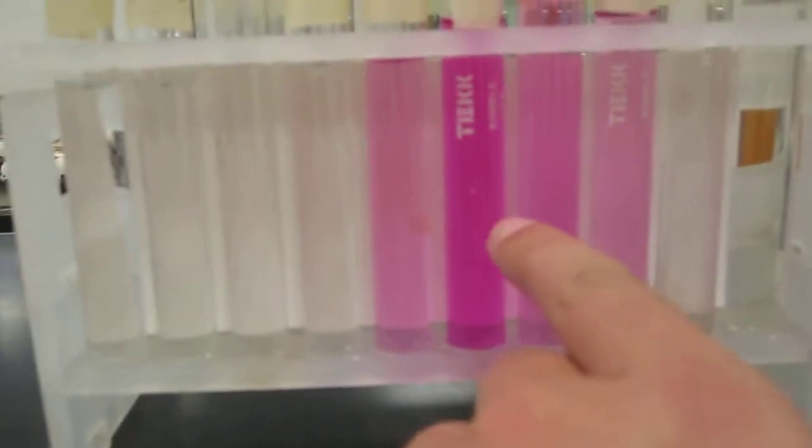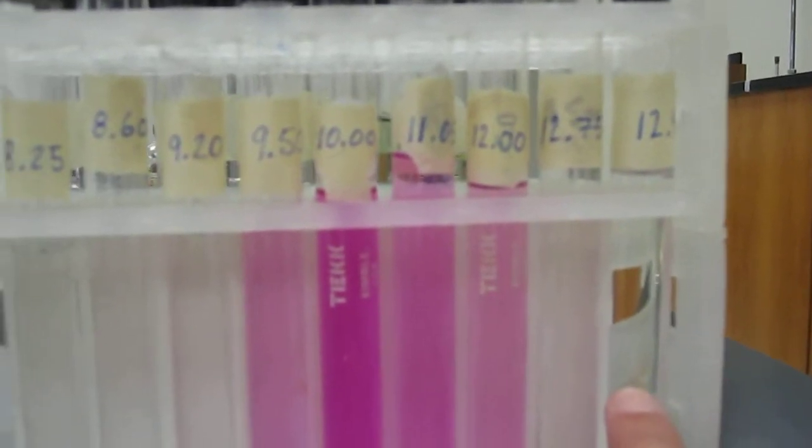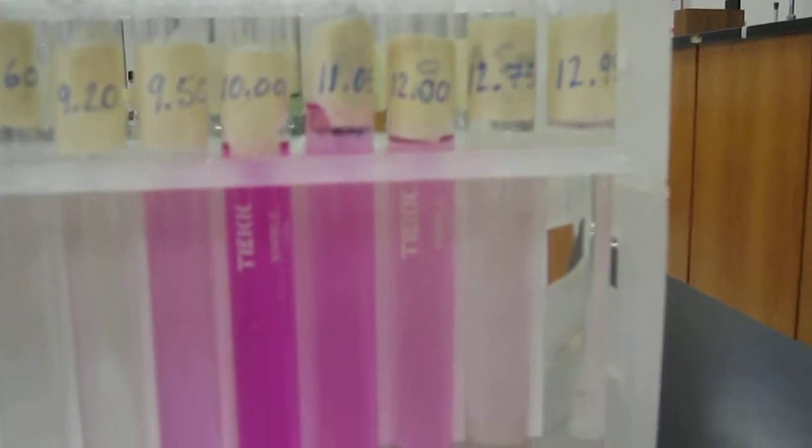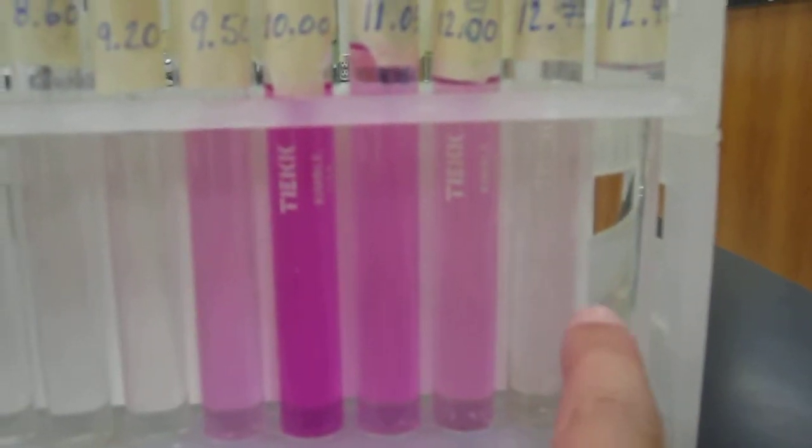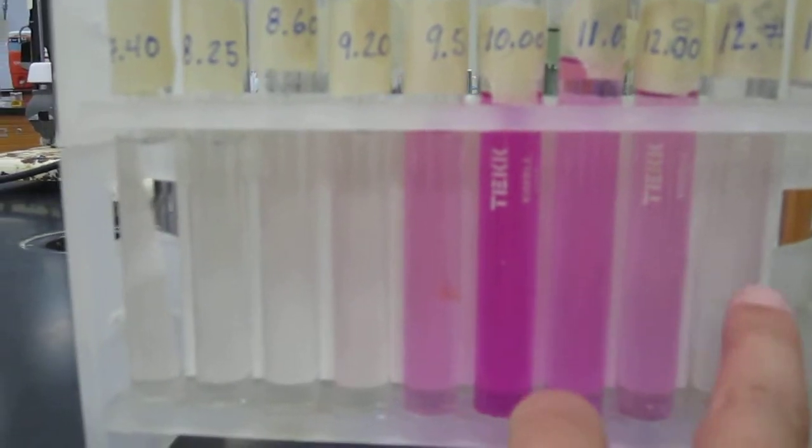And then it actually lightens in color to when it gets to about 12.8 or so, there's no more pink seen. So it goes from colorless to pink, and then back to colorless. So that's phenolphthalein.